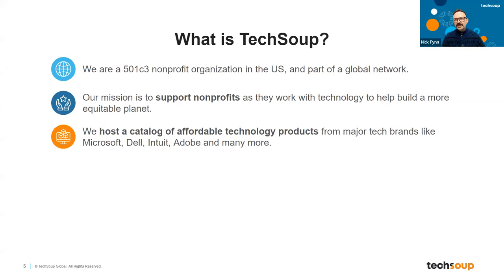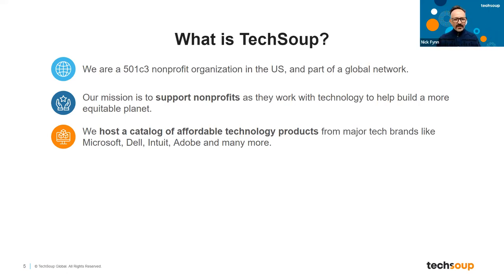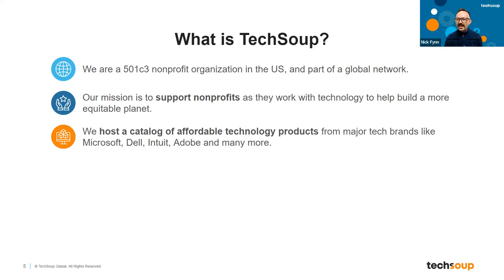One of the ways we support nonprofits is that we host a catalog of technology offers. Lots of major tech companies aspire to have more nonprofits use things that they build, so they make offers available to nonprofits — saving a certain amount of money or getting a product perhaps for free. TechSoup aggregates these offers into one space so nonprofits can see different offers and philanthropic discounts available to them. Over time that's grown, and we continue to add more items. Some of the biggest brands include Microsoft, Dell, Intuit, and Adobe.